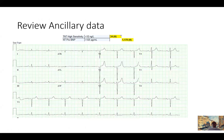After that, we review the ancillary data. This patient had a troponin that is consistently elevated in the mild range, with multiple hospital visits showing troponins above the detection cutoff of 34, and an elevated pro-BNP. We also look at the EKG — this patient shows low voltage in the limb leads. However, we know that at least 50% of patients with TTR amyloidosis do not satisfy the criteria for low voltage on EKG.